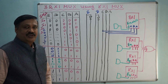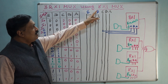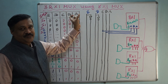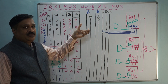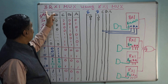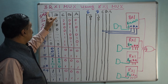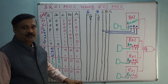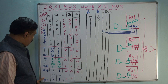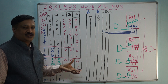Good morning. Today we are going to see 32 by 1 multiplexer using 8 by 1 multiplexer. You already know what a multiplexer is — multiplexer means many to one. Here, how to implement 32 by 1 MUX using 8 by 1: that means 32 inputs are there in the multiplexer, and out of these 32 we have to select only one. That is the multiplexer concept.